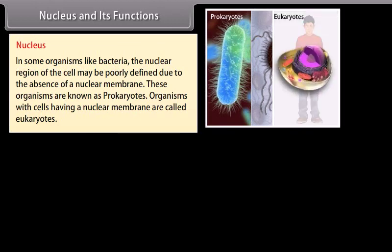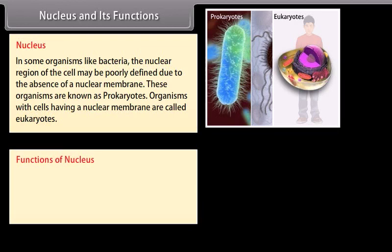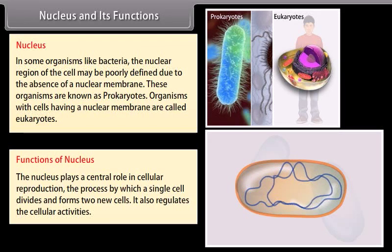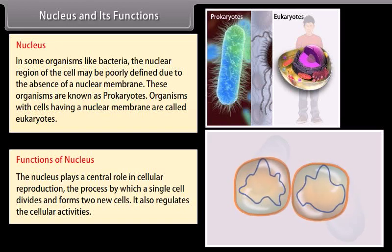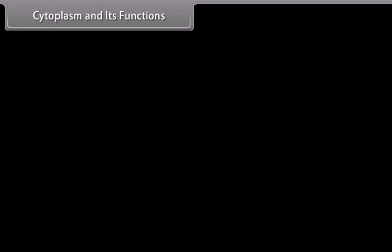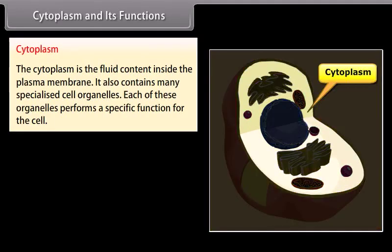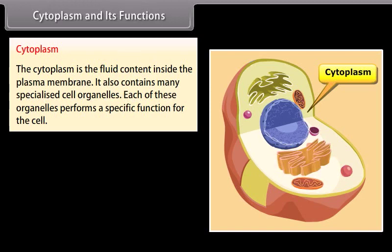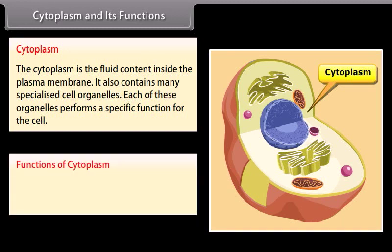Organisms with cells having a nuclear membrane are called eukaryotes. The nucleus plays a central role in cellular reproduction — the process by which a single cell divides and forms two new cells — and it also regulates cellular activities. The cytoplasm is the fluid content inside the plasma membrane. It also contains many specialized cell organelles, each of which performs a specific function for the cell. In the cytoplasm, all cell organelles are embedded.